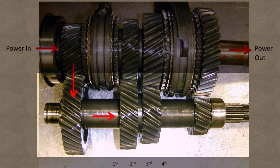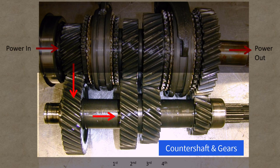The gears on the bottom shaft are known as the counter shaft and they are all fixed to the shaft. All of these gears on the counter shaft rotate as one unit.